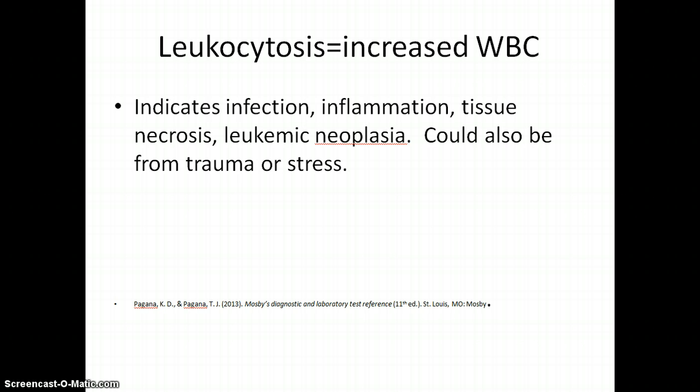When you have leukocytosis it means an increase in the white blood cell count and it can be from a lot of things going on in the body. It can be viral or bacterial infection. It can be tissue necrosis, such as during a heart attack when the myocardial tissue is not getting enough oxygen — people can have an increased white blood cell count because they are having a heart attack. It could also be from trauma, stress, and many other things.